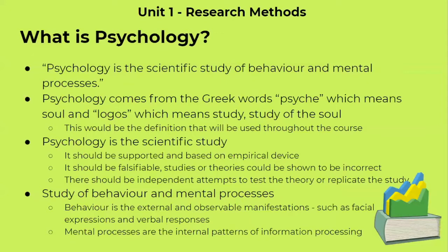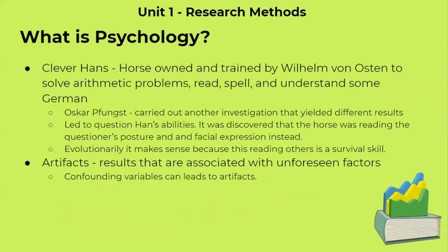The second part of the definition covers behavior and mental processes. Behavior is anything that is observable, such as facial expressions and verbal responses. Mental processes are behind-the-scenes internal patterns. Using a movie analogy: behavior is the finished product we see on screen, while mental processes are all the crew working behind what we see.